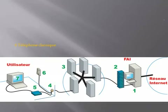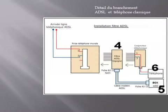It is possible to use the classic phone, represented in 6, at the same time as my DSL connection. For this, we need to use a filter, like the one represented in 4, which allows you to carry both the DSL and the phone signal on the same line.